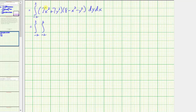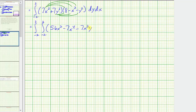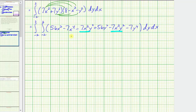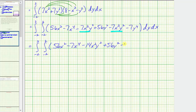Multiplying out gives us a total of six products: 56x squared minus seven x to the fourth minus seven x squared y squared, plus 56y squared minus seven x squared y squared minus seven y to the fourth. Combining the two like x squared y squared terms, the simplified integrand is 56x squared minus seven x to the fourth minus 14x squared y squared plus 56y squared minus seven y to the fourth.